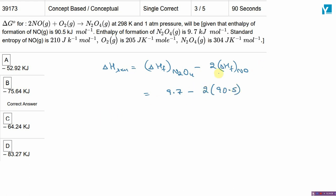Similarly, entropy change of the reaction will be entropy of products minus reactants. Products we have N2O4.